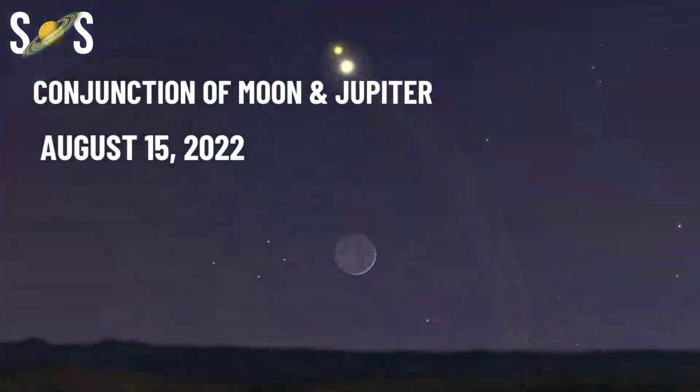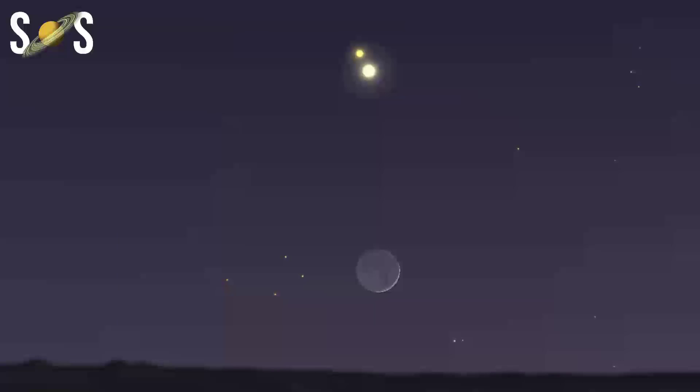August 15th: conjunction of the moon and Jupiter. It's hard to believe how far apart Jupiter and Saturn are in the night sky after their great conjunction just over 18 months ago. Whereas these two planets used to have conjunctions with the moon in close succession, they're now occurring several nights apart. As Saturn has already taken its turn in August, it's now Jupiter's time to have a close approach in the night sky.